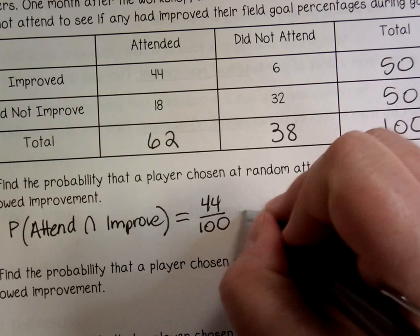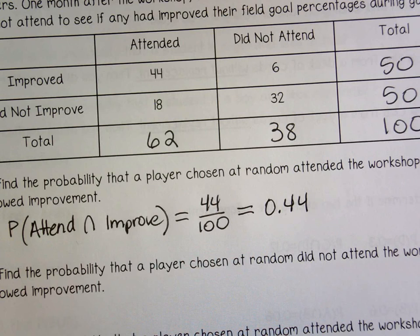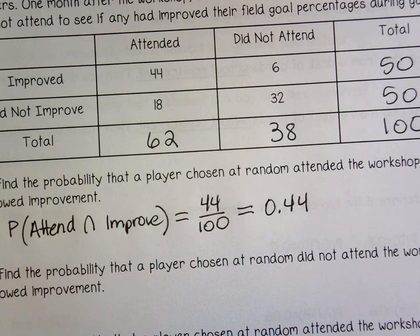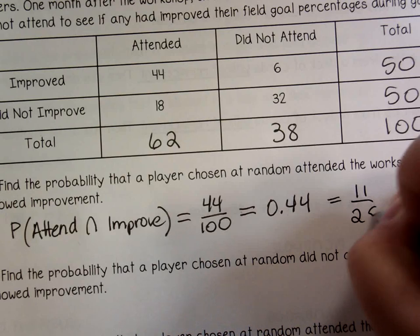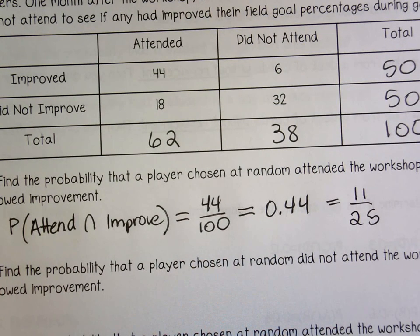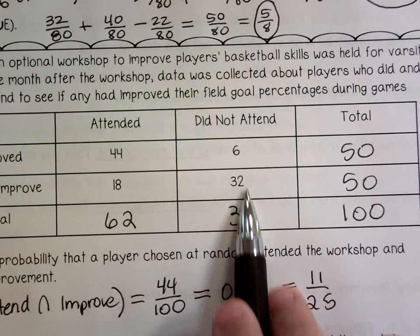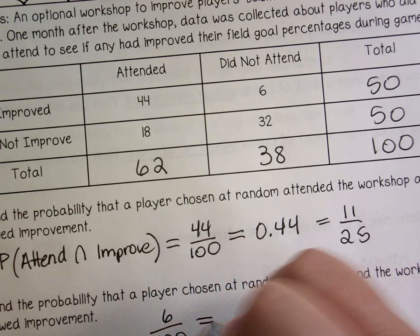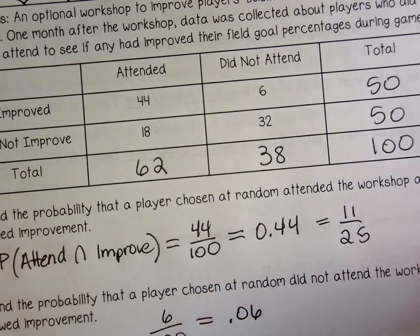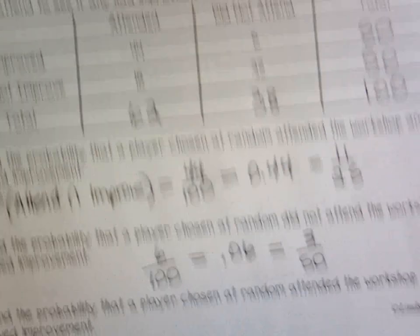Number 14 — 44 out of 100, which is 0.44, or 11 twenty-fifths. Find the probability that a player chosen at random did not attend and showed improvement. Six people did not attend but showed improvement — so that's 6 out of 100, which is 3 fiftieths. Decimal or fraction is fine on these.